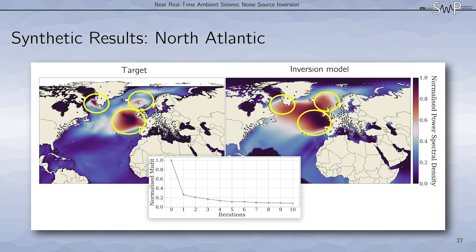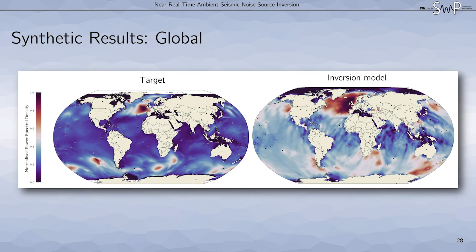As we can see, the main dominant noise sources in the target model, shown by the yellow circles here, are also present in the inversion model after 10 iterations, albeit with considerable smearing. In this synthetic test, we are able to reduce the misfit by more than 90%. We also perform synthetic tests on a global scale using the same model but 173 stations distributed all over the globe.